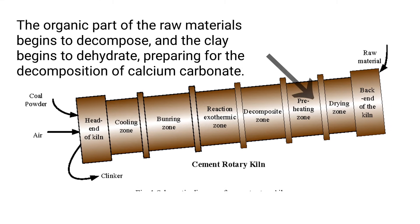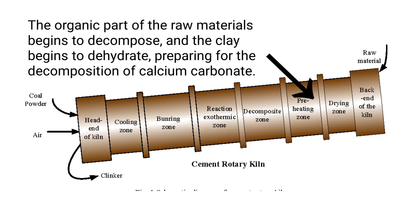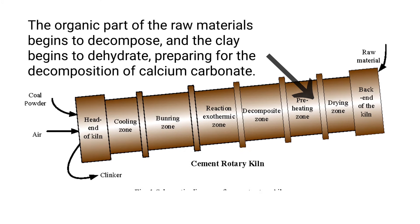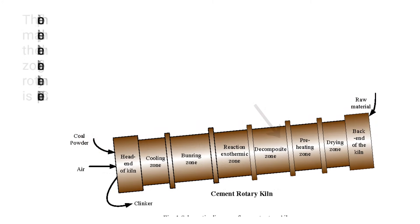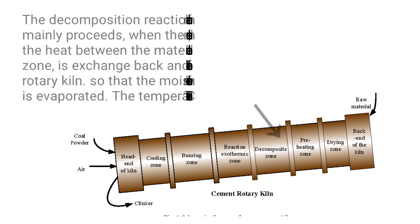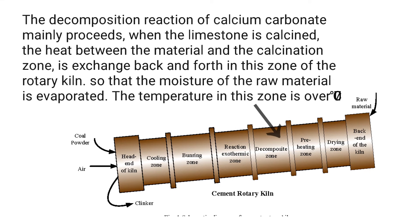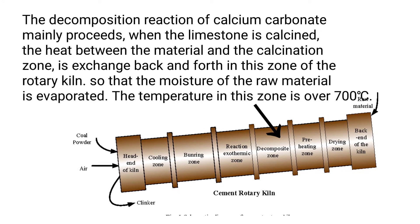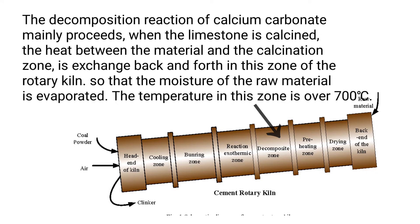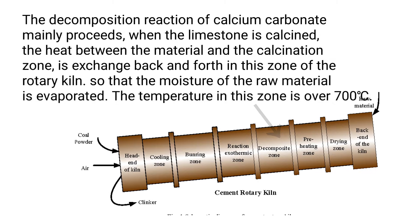Preheating zone: the organic part of the raw materials begins to decompose and the clay begins to dehydrate, preparing for the decomposition of calcium carbonate. Decomposition zone: the decomposition reaction of calcium carbonate mainly proceeds when the limestone is calcined. Heat between the material and the calcination zone is exchanged back and forth, so that the moisture of the raw material is evaporated. The temperature in this zone is over 700 degrees Celsius.